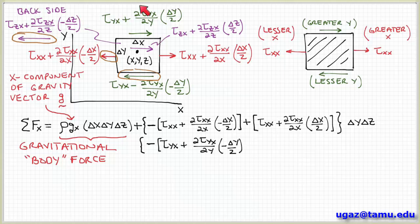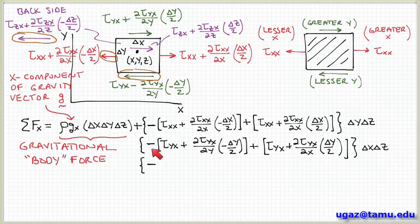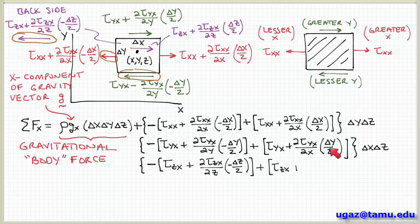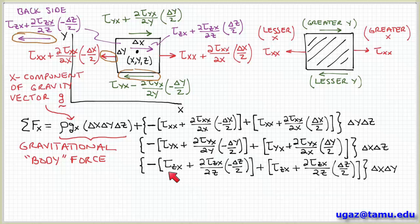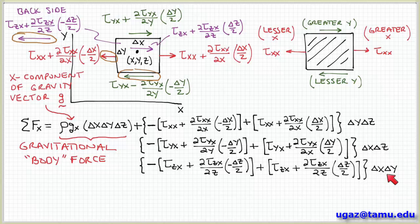On the face with a normal vector in the y direction, we have tau_yx plus the partial of tau_yx with respect to y times negative delta_y over 2 for the bottom face — that's a negative stress by our sign convention — plus tau_yx plus the partial of tau_yx with respect to y times delta_y over 2, all multiplied by the area delta_x delta_z. On the front and back sides, we have tau_zx plus the partial of tau_zx with respect to z times negative delta_z over 2 for the back side, plus tau_zx plus the partial of tau_zx with respect to z times delta_z over 2, multiplied by area delta_x delta_y.